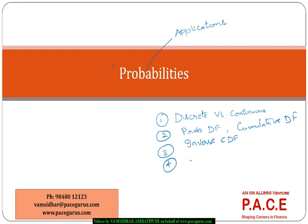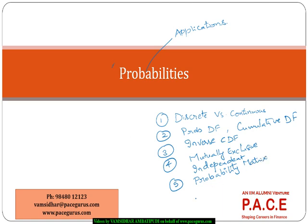Then we will go ahead and try to understand different kinds of events — mutually exclusive events and independent events — and the conceptual difference between them. We will also cover what is a probability matrix, and towards the end, conditional probability. So this is the scope that we are going to touch base upon in this session. Let's get started one by one.